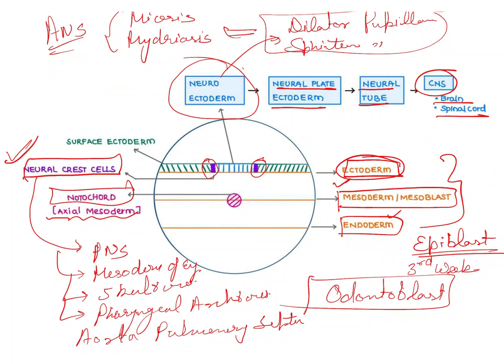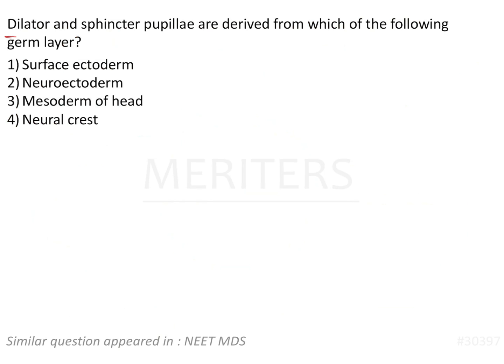But in this question, our focus is on the neuroectoderm. The dilator and sphincter pupillae are derived from the neuroectoderm. The answer to this question is the second option, and it also gives rise to the CNS, which means the brain and spinal cord are developed from here.